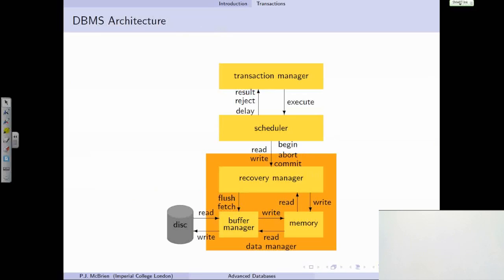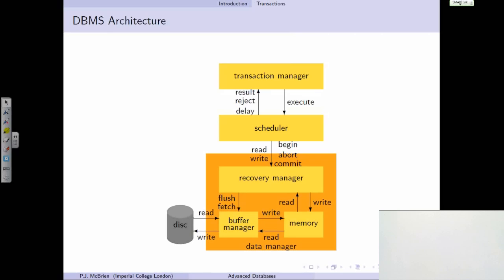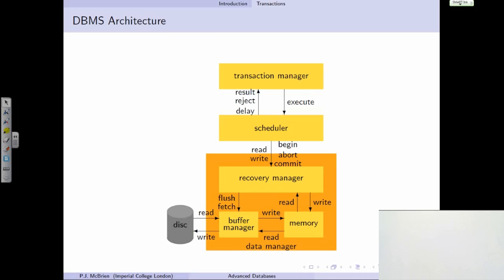In terms of how transactions are implemented: SQL statements go into a transaction manager, which breaks them into a sequence of operations; these go into a scheduler, which decides how operations can be interleaved to maintain ACID properties; and then on to a data manager, which executes them efficiently with respect to caching. I'll go into more detail about how concurrency works at a higher level than I did in the introductory course.